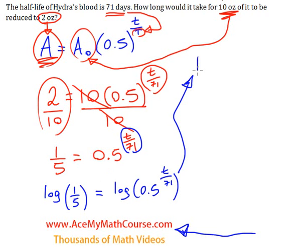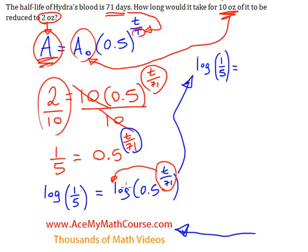The left-hand side of the equation remains the same with no changes made. But on the right-hand side of the equation, I can bring down the t over 71 and multiply it by the log of 0.5. That's the reason why we took the log of both sides — so we can bring down the exponent.